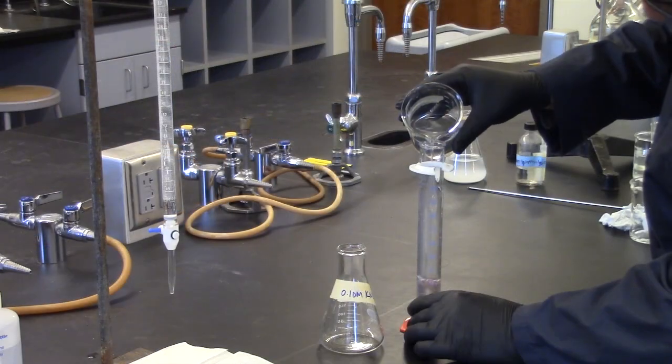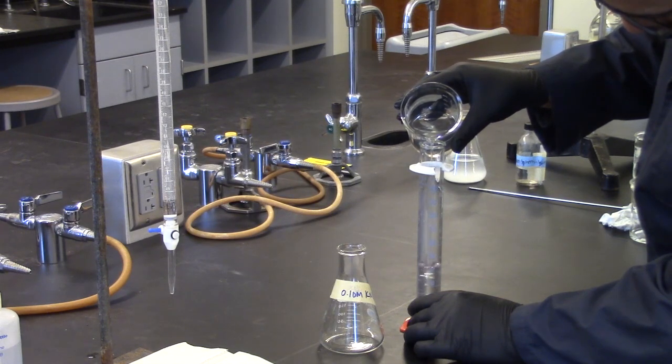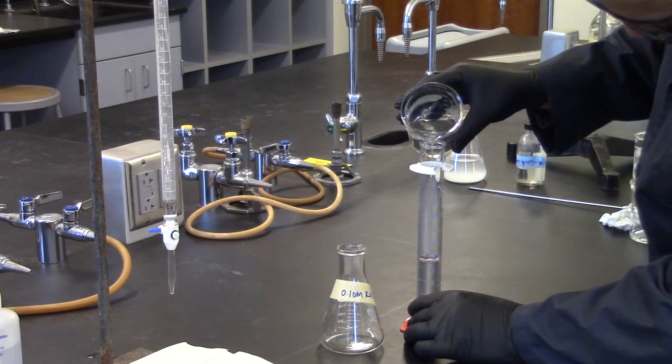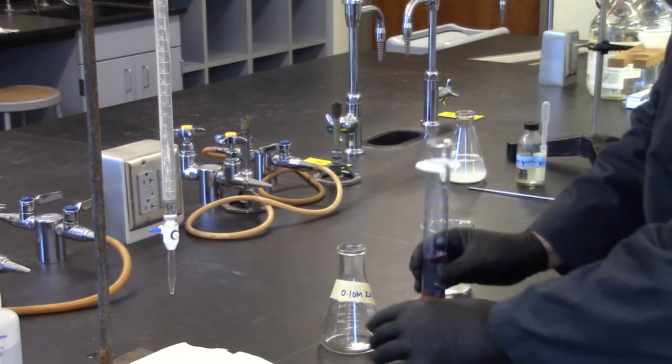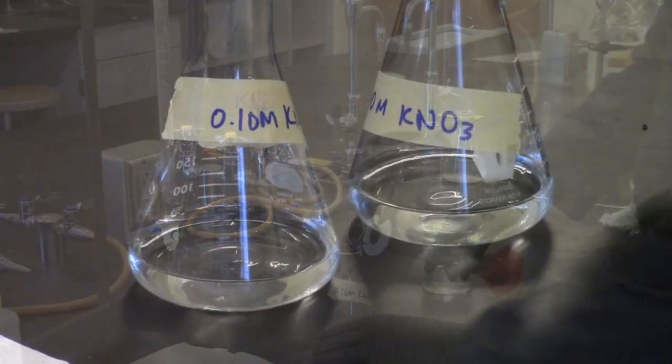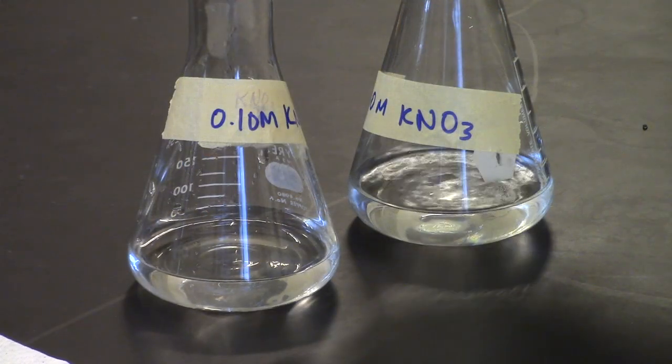Start with potassium nitrate, for it contains a common ion and it will be the least soluble. Measure out 25.0 ml samples and add two to three drops of indicator phenolphthalein to each flask.